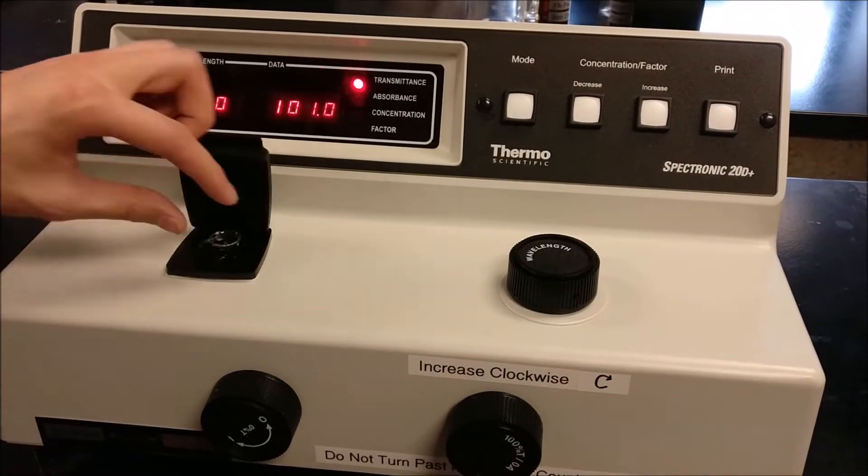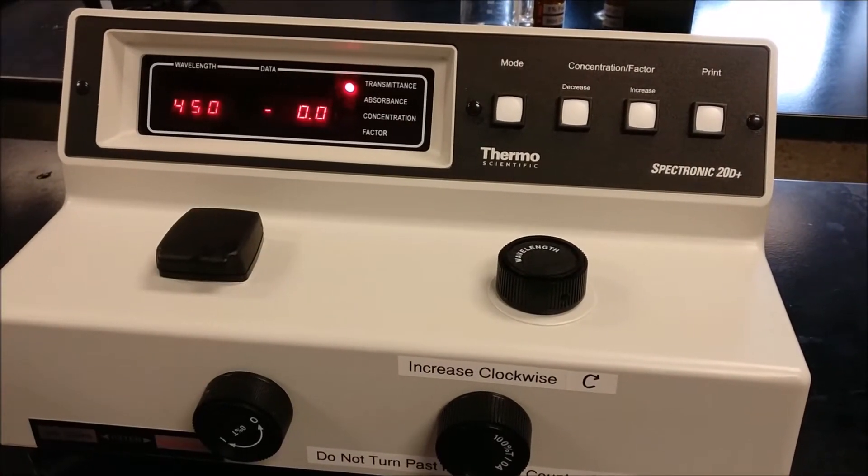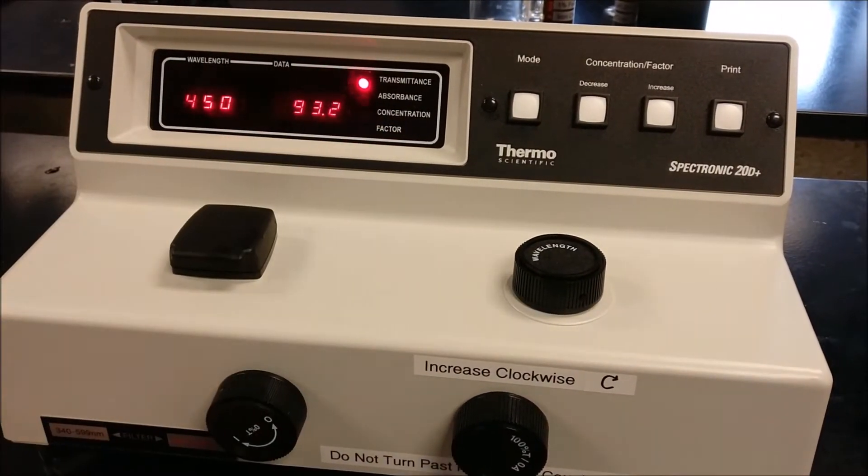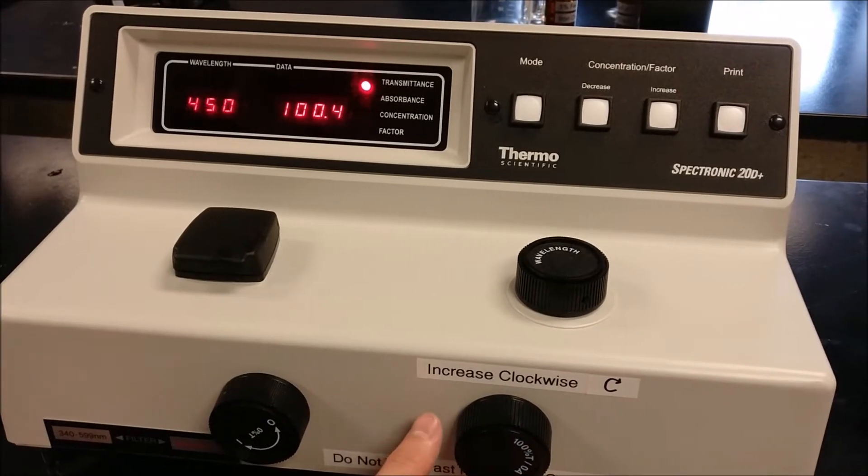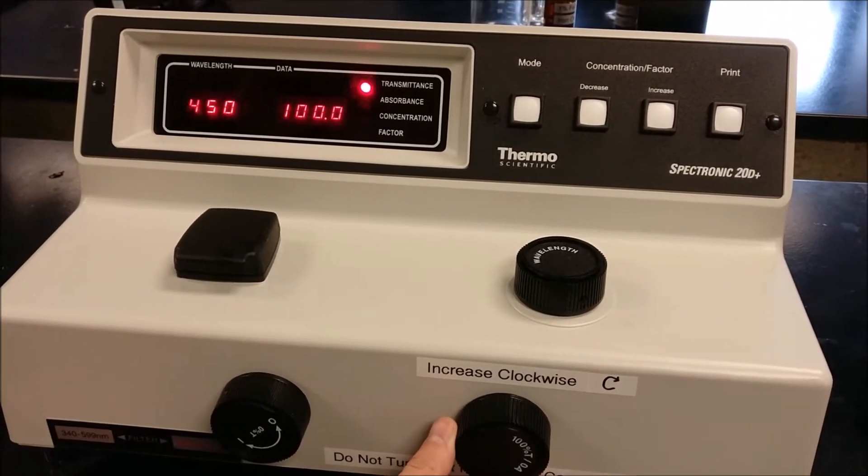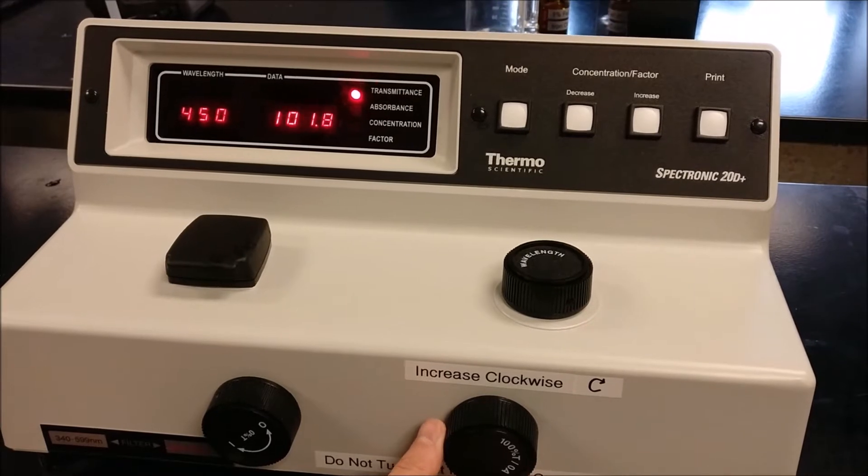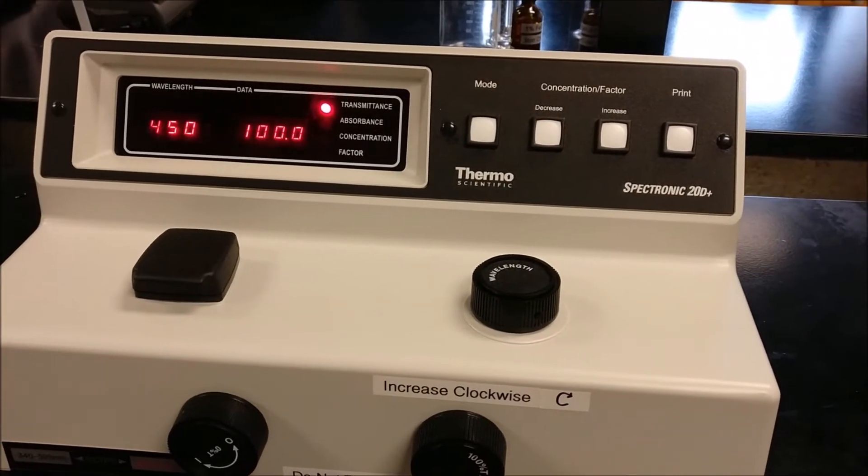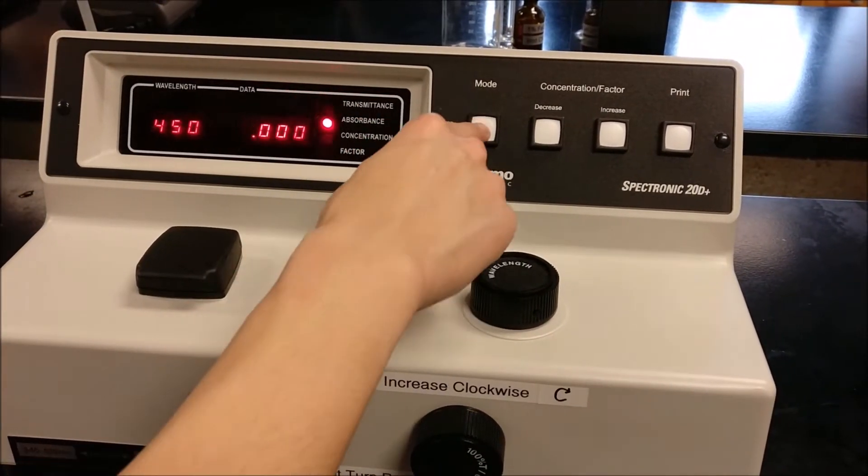Then take the test tube and close the sample holder and see if the transmittance goes back to 0. If it doesn't, recalibrate it. Then put the test tube back in. If the transmittance doesn't go back to 100, recalibrate it using the 100% T knob. After the calibration is finished, set the mode to absorbance.